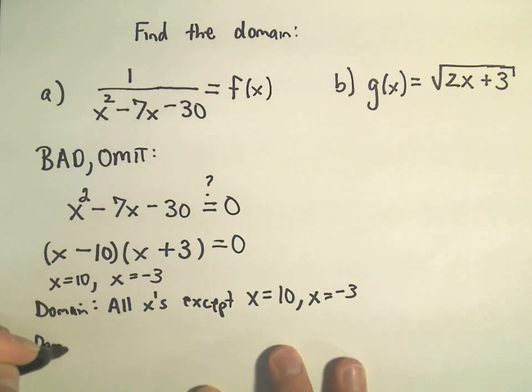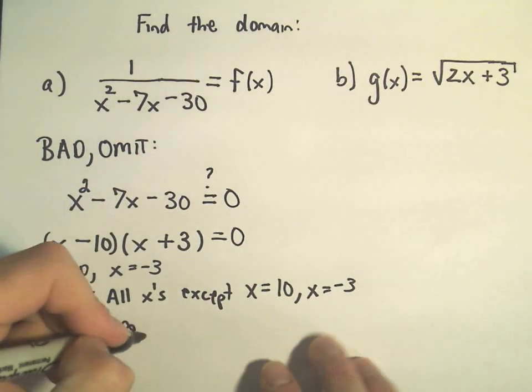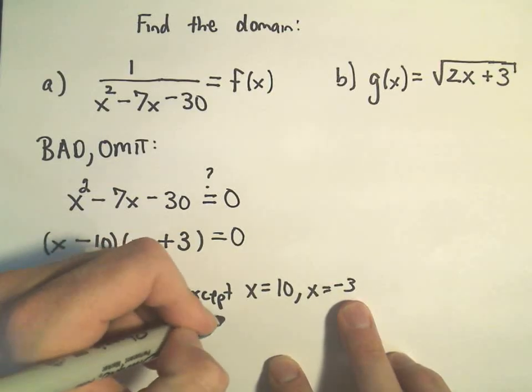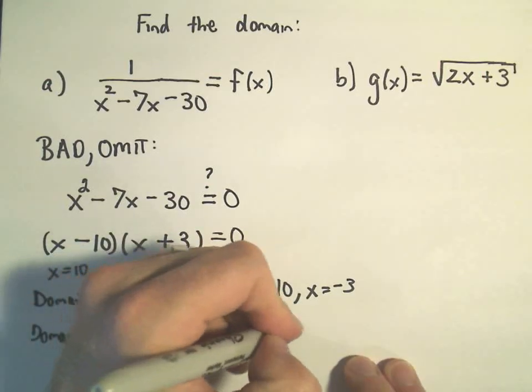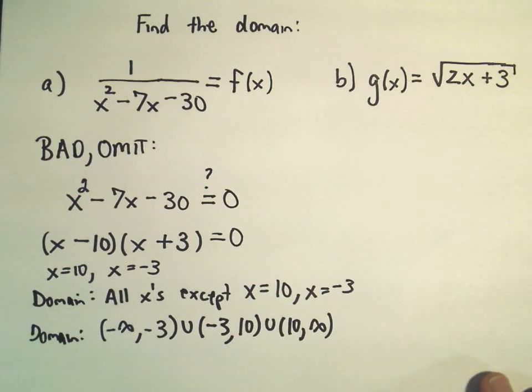We could write that in interval notation by simply saying it's from negative infinity up to negative 3, then we have to skip over negative 3 and go up to 10, and then we have to skip over 10 and go all the way to positive infinity. So sort of two different equivalent ways.